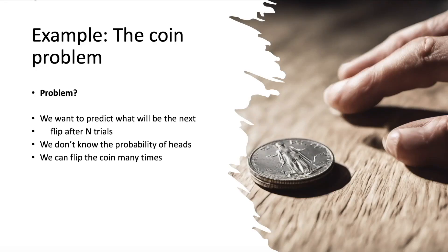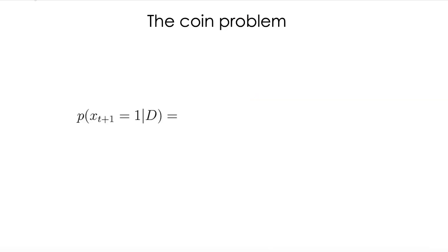Hi everyone. Now we are going to see an application in a very simple problem, but I think it's very useful to understand all what we saw in the previous video. This simple problem is just about making inference over flipping a coin — we have the coin, we have no idea about the probability of getting heads or tails. So how could we predict what's going to happen on the next flip?